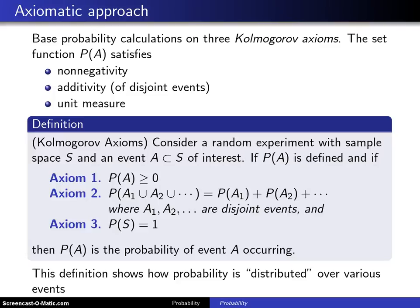So the equally likely approach is limited because not everything is equally likely, and that's where the axiomatic approach comes along. The axiomatic approach bases probability calculations on three Kolmogorov axioms.